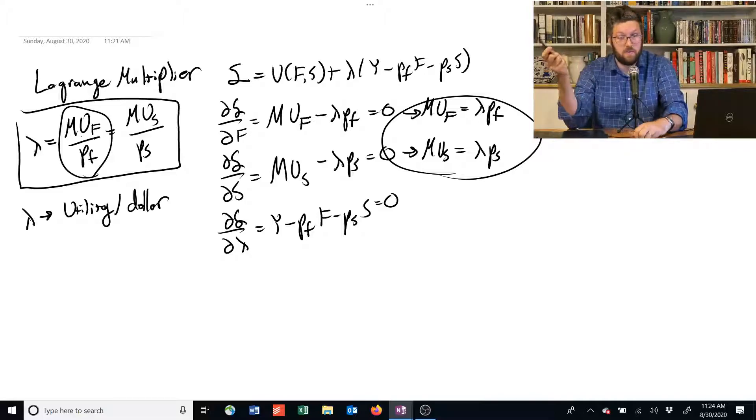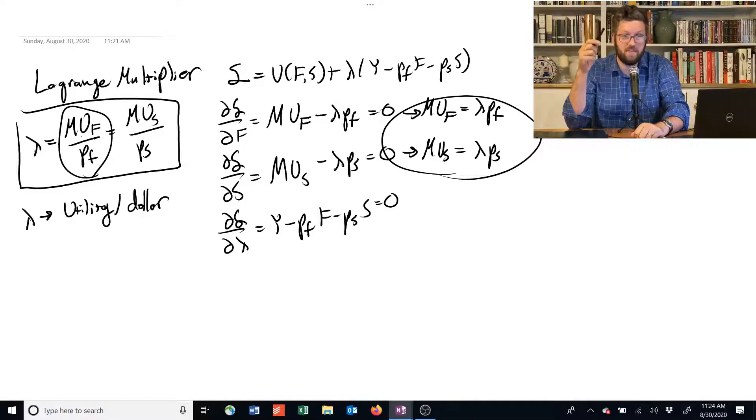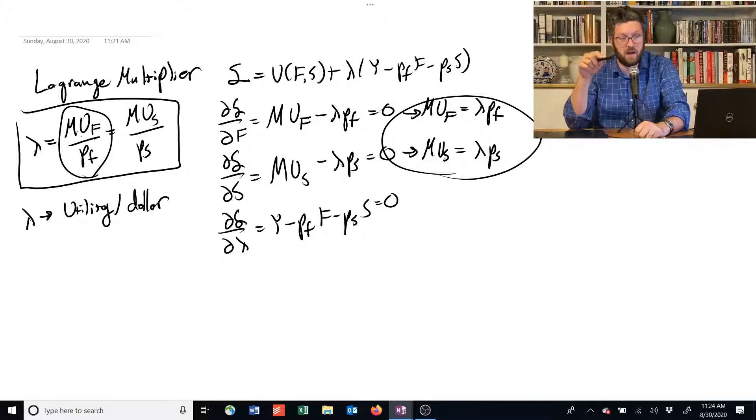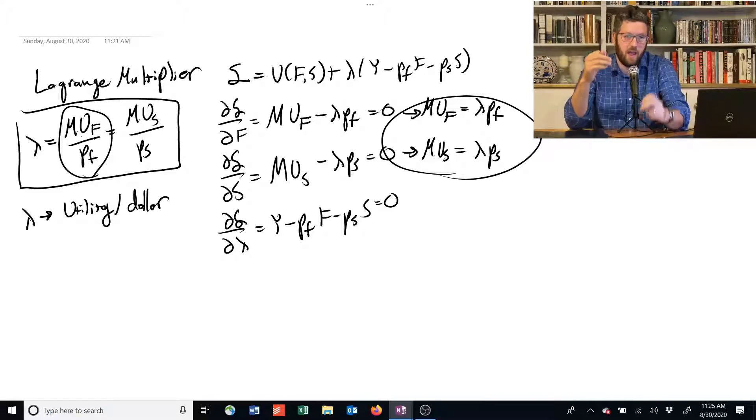And it's also saying that you could also spend the money on shelter. And if you did that, the amount of extra shelter you could buy is one dollar divided by ps, the price of shelter. And we multiply that by the marginal utility you would have gotten if you got that extra unit of shelter. So it's telling you how much extra utility you get for a dollar if you spend it in either place.